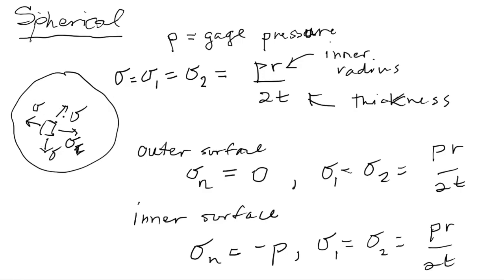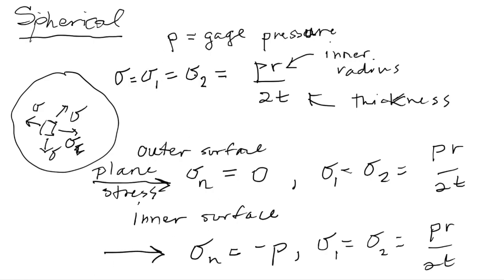Since σ1 and σ2 are the same, this is a classic example of a Mohr's point — the Mohr's circle collapses down to a point and every rotation is a principal rotation. These are the principal stresses. On the outer surface, since σ_n = 0 and σ1, σ2 are nonzero, this is an example of plane stress — more specifically biaxial stress. On the inner surface, since σ1, σ2, and σ_n are all nonzero, this is triaxial stress. You can then use Mohr's circle for plane stress or the three-circle approach for triaxial stress to find maxima and minima.